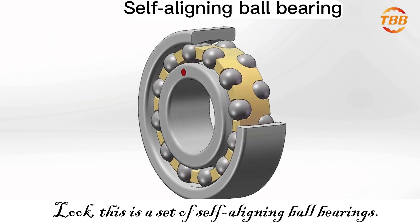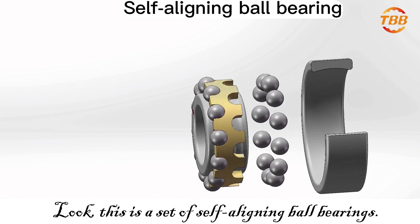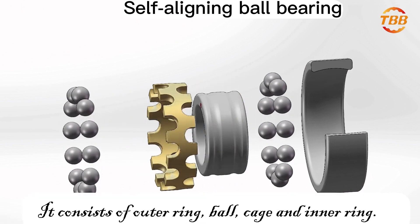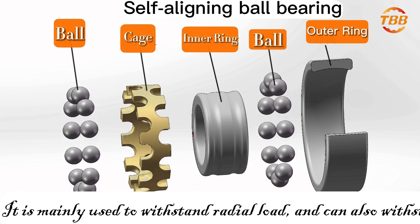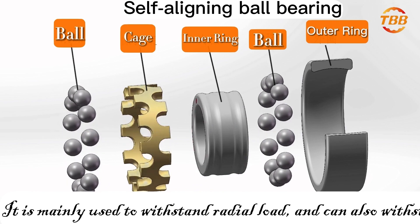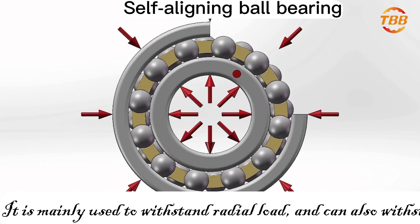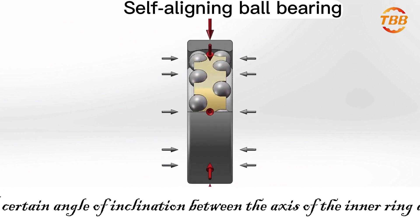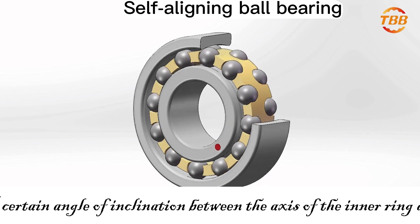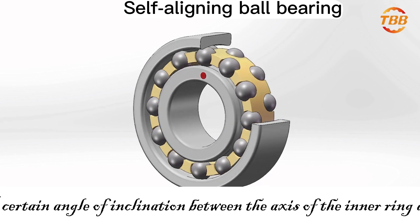This is a set of self-aligning ball bearings. It consists of outer ring, ball, cage, and inner ring. It is mainly used to withstand radial load and can also bear small axial load. A certain angle of inclination between the axis of the inner ring and the axis of the outer ring is allowed.